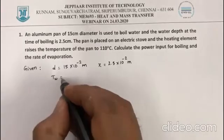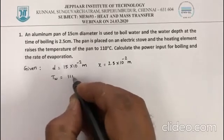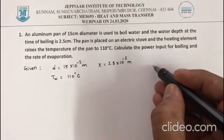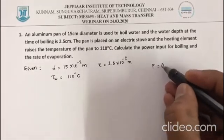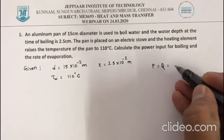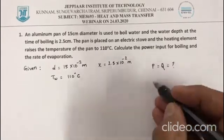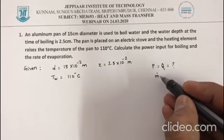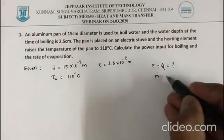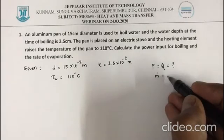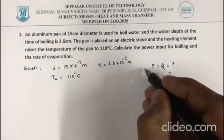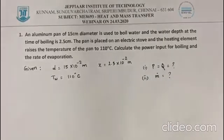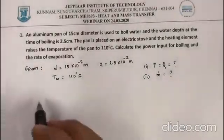Now let's start solving this problem. The base temperature is 110°C. You have been asked to calculate the power input or Q, the amount of heat transferred while boiling, and also the rate of evaporation, denoted by m dot, which is also known as the mass flow rate.